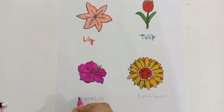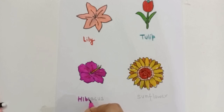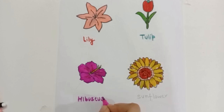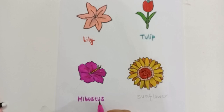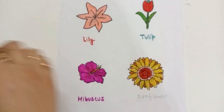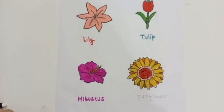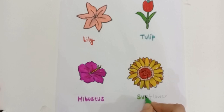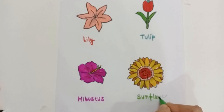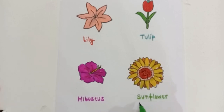Pink color. H for Hibiscus: H-I-B-U-S-C-U-S. Hibiscus is also a flower. Pink color. Green color. S for Sunflower: S-U-N-F-L-O-W-E-R. Sunflower.